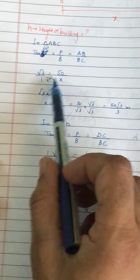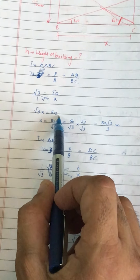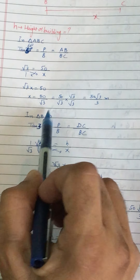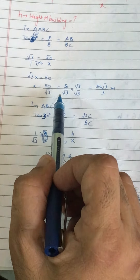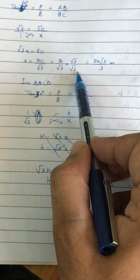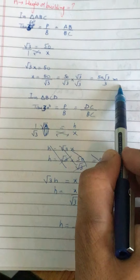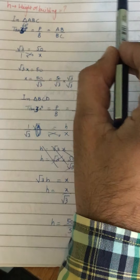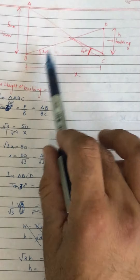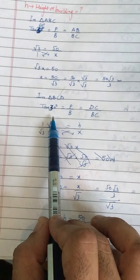tan60° equal to P upon B, equal to AB by BC. AB is 50 and base is x. So root 3 is equal to 50 upon x. Cross multiply: root 3 x is equal to 50, x is equal to 50 by root 3. The denominator should not have a square root, so we rationalize it: x = 50 root 3 by 3.